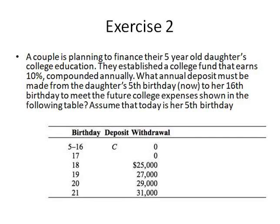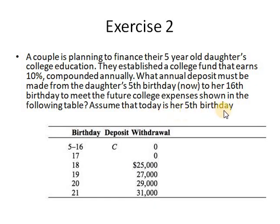Consider the second exercise. A couple is planning to finance their five-year-old daughter's college education. They established a fund that earns 10%. The required annual deposit must be made from the daughter's fifth birthday, which is the present value, to her 16th birthday, to meet the future expenses shown in the table. Assume today is her fifth birthday.